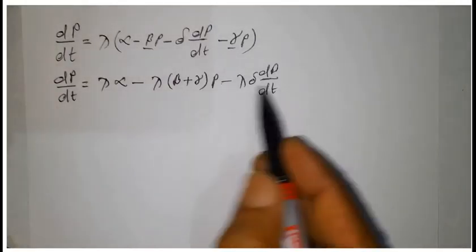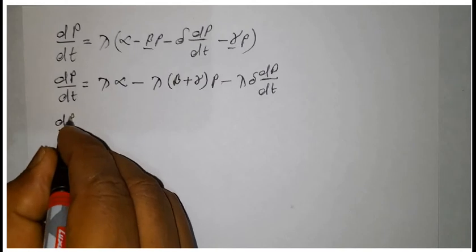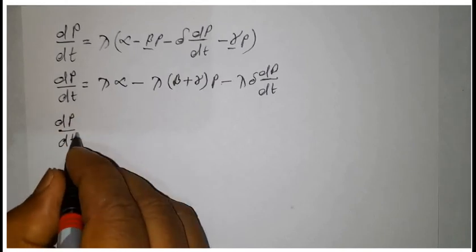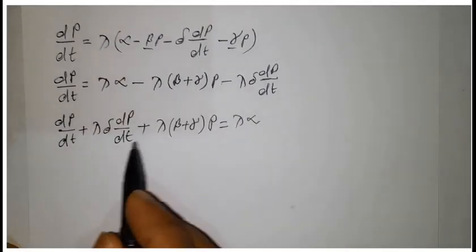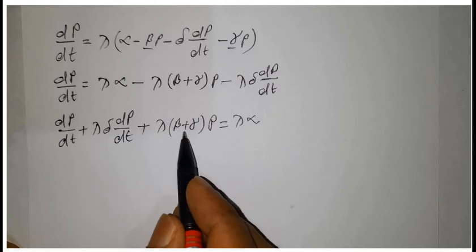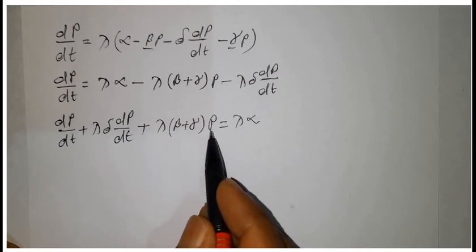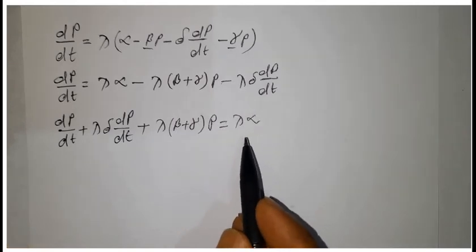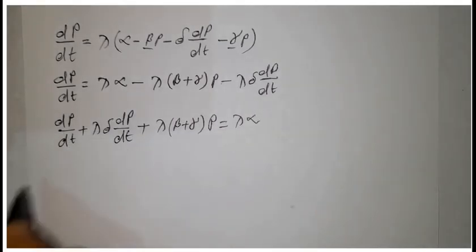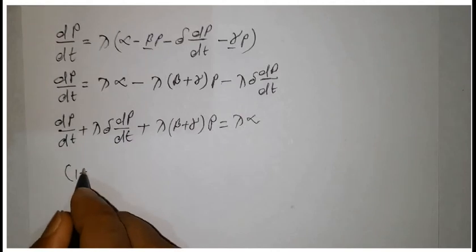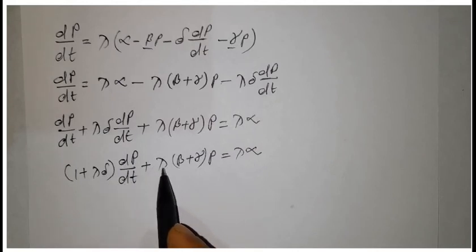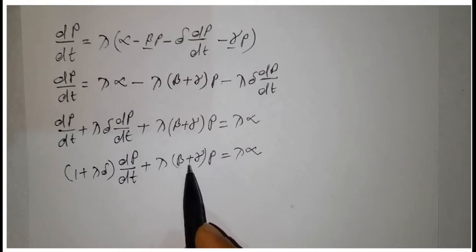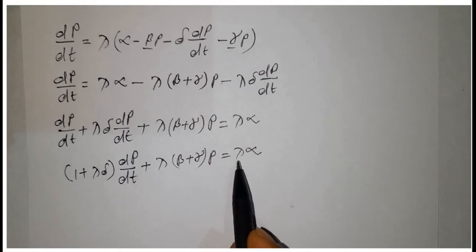Taking the dP/dt term to the left-hand side, we get dP/dt plus lambda·delta·(dP/dt) plus lambda·(beta plus gamma)·P equals lambda·alpha. Adding these two terms we get (1 plus lambda·delta)·(dP/dt) plus lambda·(beta plus gamma)·P equals lambda·alpha.